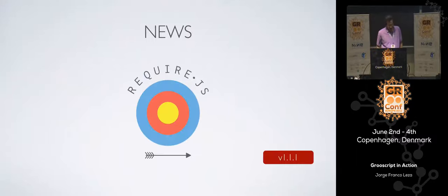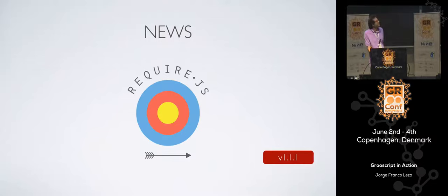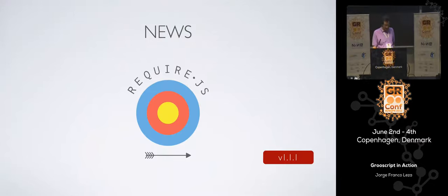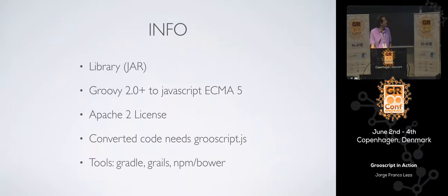Some news about the project: the latest version is 1.1.1. From version 1.1.1 we have support for require.js — require.js is something like a package manager for JavaScript. So if your project grows bigger and you have a lot of JavaScript files, with require.js there is a style of packaging that makes it easier to know where things are. GroovyScript is totally open source — you can use it or do whatever you want.